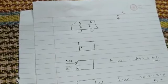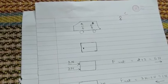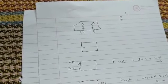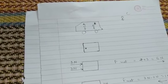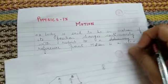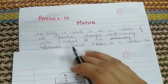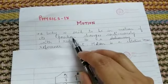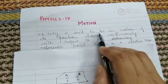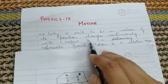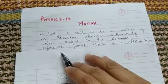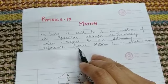Similarly, we can take another example: mountains. To us, the mountains appear to be at rest. But with respect to the sun, the mountains are continuously moving. Why? Because the earth is revolving around the sun continuously. So now I hope the statement of motion is clear. A body is said to be in motion if its position changes continuously with respect to a reference point.